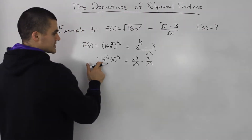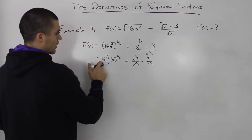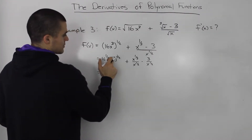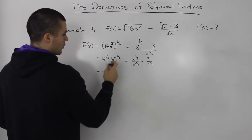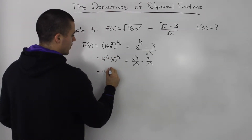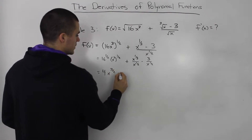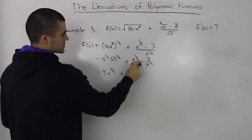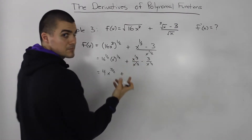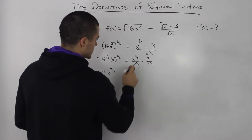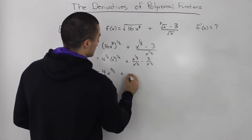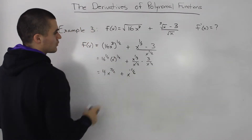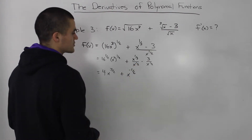What's 16 to the power of 1 half? That's just the square root of 16, which is 4. For x cubed to the power of 1 half, you multiply the exponents, so you get x to the power of 3 over 2. Notice these two expressions are divided with the same base, so we can subtract the exponents: 1 over 3 minus 1 over 2. The 1 over 3 becomes 2 over 6, and the 1 over 2 becomes 3 over 6.